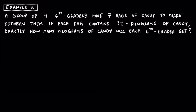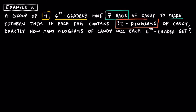For example two, a group of four sixth graders have seven bags of candy to share between them. If each bag contains three and one third kilograms of candy, exactly how many kilograms of candy will each sixth grader get? First, let's identify how many sixth graders are sharing — there are four. Next, they have seven bags to share between all of them. Inside each bag, it's important to know each one contains three and one third kilograms of candy per bag. Because we're being asked how much each sixth grader gets, we're sharing things — we're thinking about division.